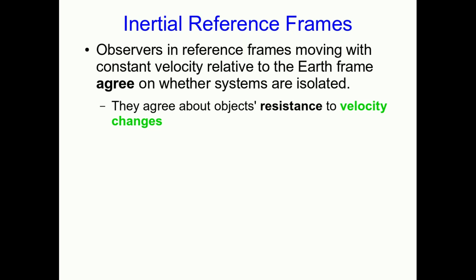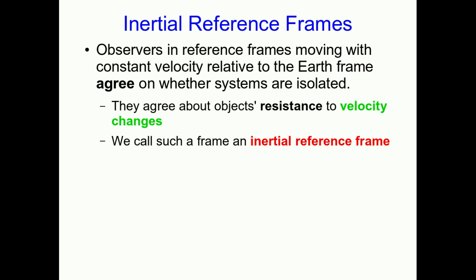Since everyone in reference frames like this agrees about the principle that things have inertia, we call these inertial reference frames. Any frame moving at a constant velocity relative to the Earth is an inertial reference frame.